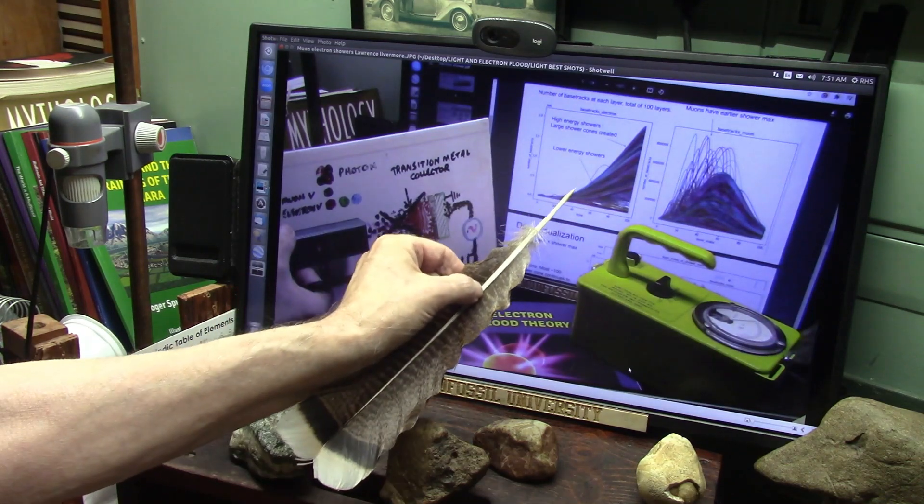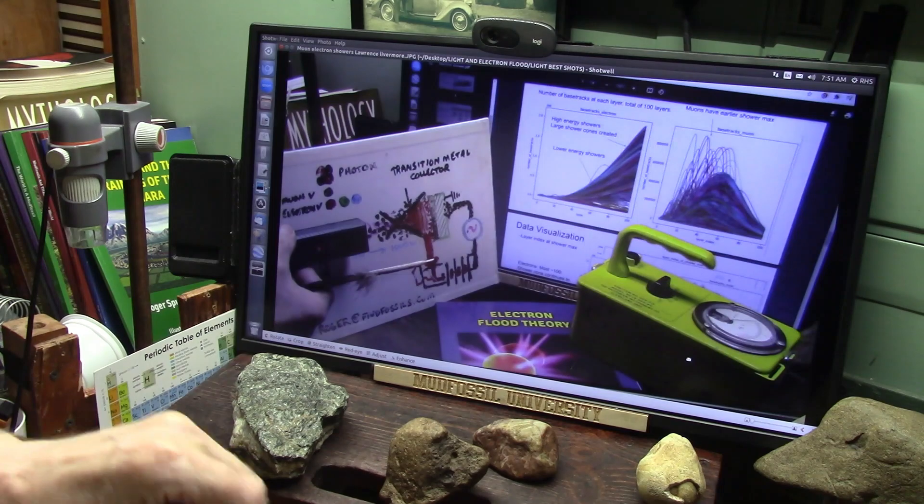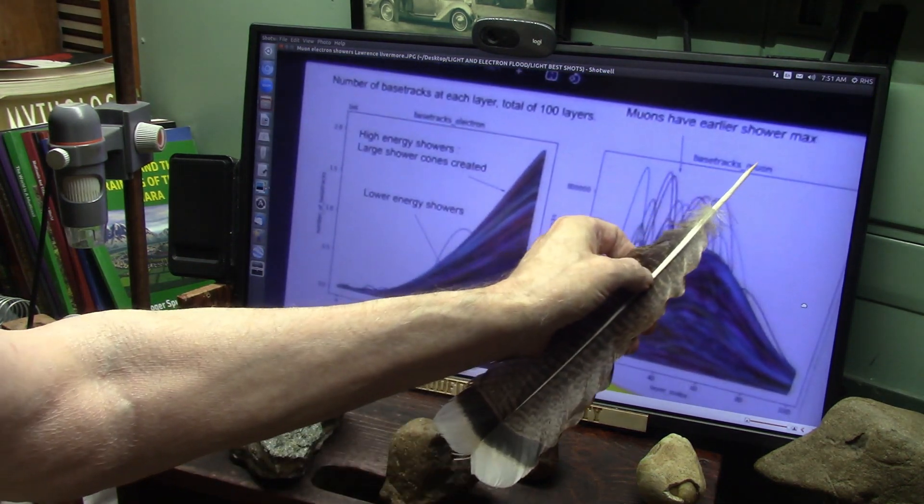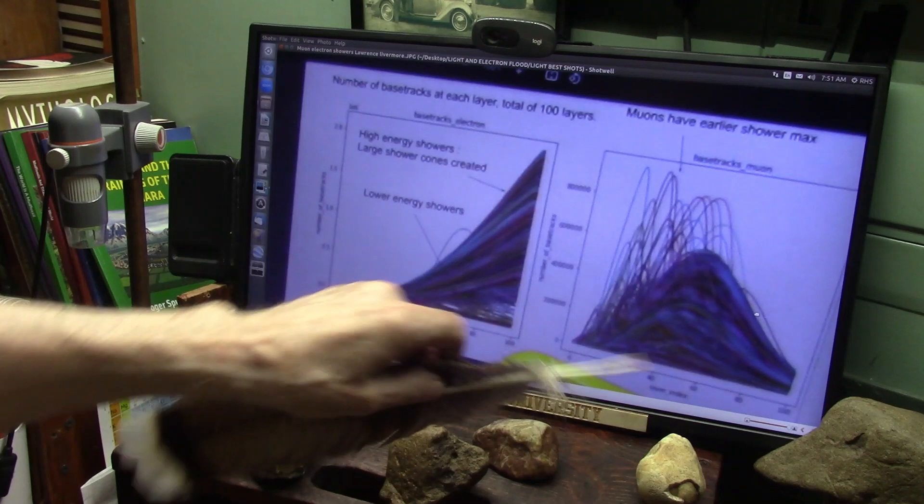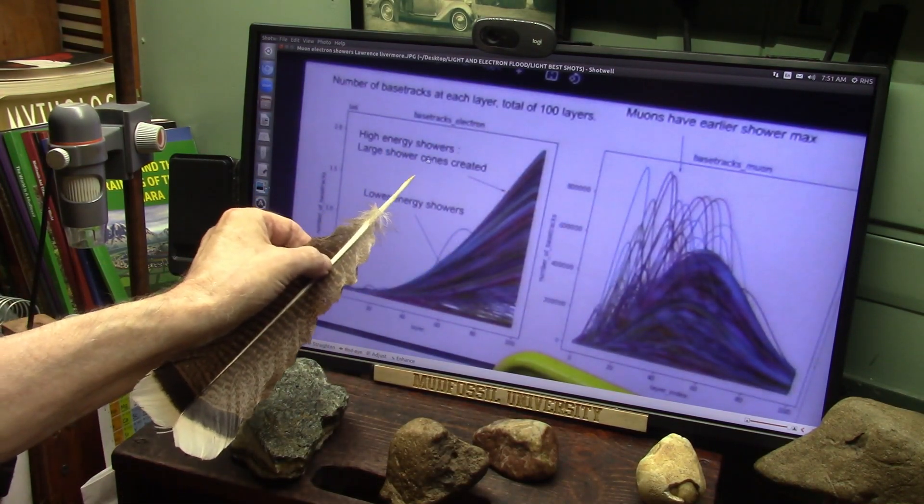The counterparts, the muons, stay back this way. You see here? These are the muons. They stay away. The electrons come through in a low energy and they go up to extremely high energy in the cones, in the showers.